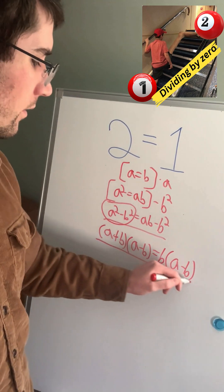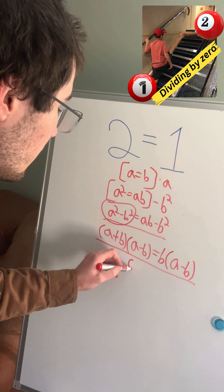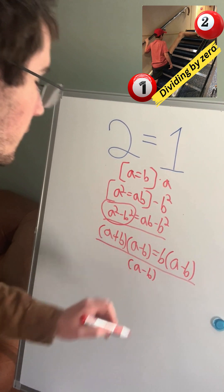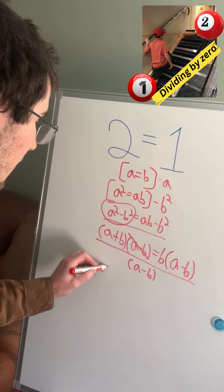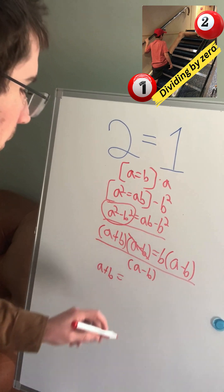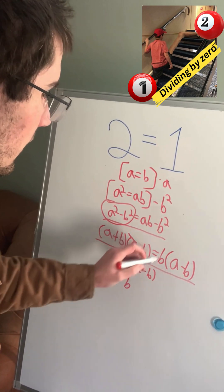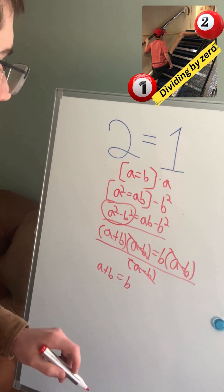And now, let's divide both sides of our equation by A minus B. On the left-hand side, this A minus B will cancel out, so we'll have A plus B. And that will be equal to just B, because this will cancel out with our denominator.